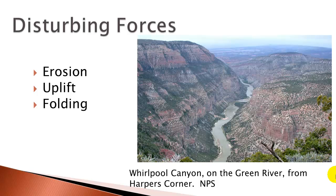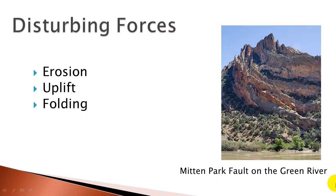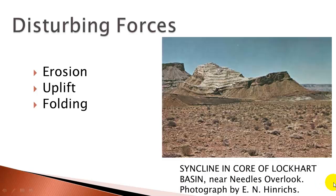There are forces that can disturb rock layers: erosion, uplift, and folding, to name a few. Here's a really good example of uplifted rocks that were also bent and folded — this is the Mitten Park Fault on the Green River out west in Colorado. And here is a really cool syncline sitting on top of some layered rocks. You can see that's an example of how folding can disturb rock layers.